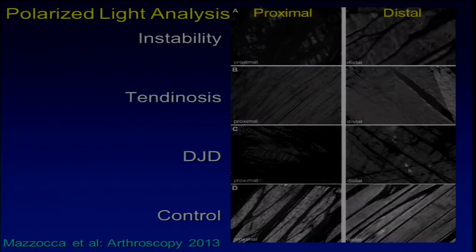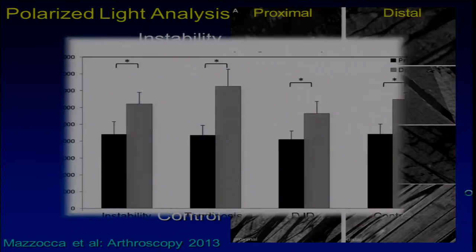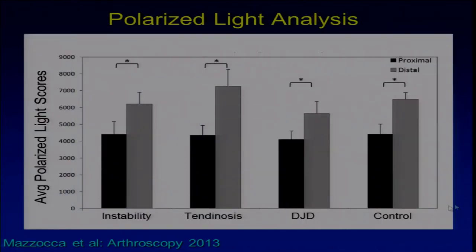They also performed polarized light analysis. The distal tendon is very well organized in terms of collagen orientation, but the proximal tendon was disorganized except in controls. In all areas, the proximal portion of the tendon has disorganized collagen fibers.